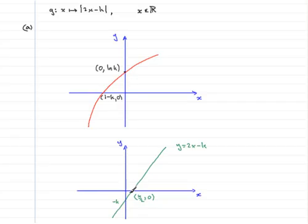all the y values cannot be negative. So that means that this part of the straight line gets reflected in the x-axis, so it's going to come up something like this.